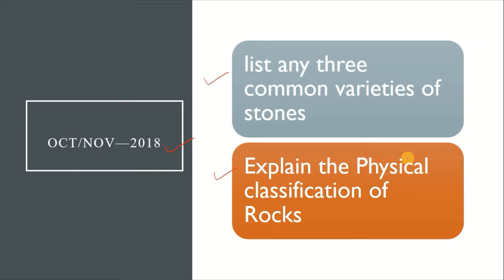The essay question for October 2018 is: explain the physical classification of rocks. You need to explain stratified, unstratified, and foliated rocks with their definitions and examples, for 10 marks.